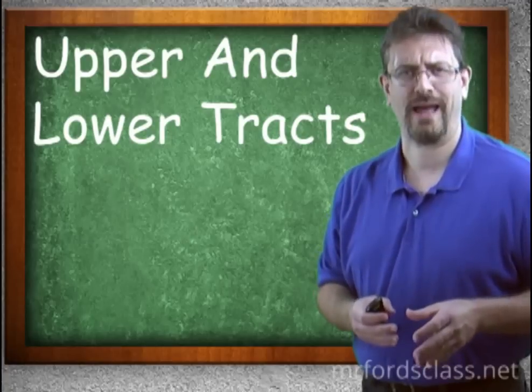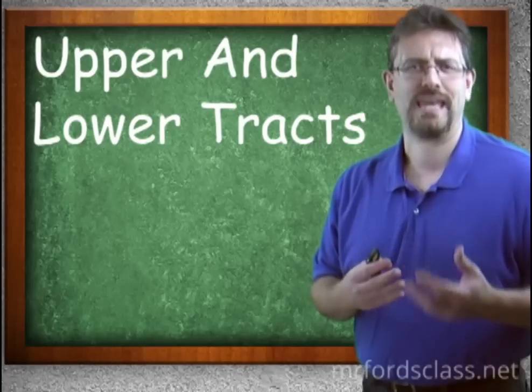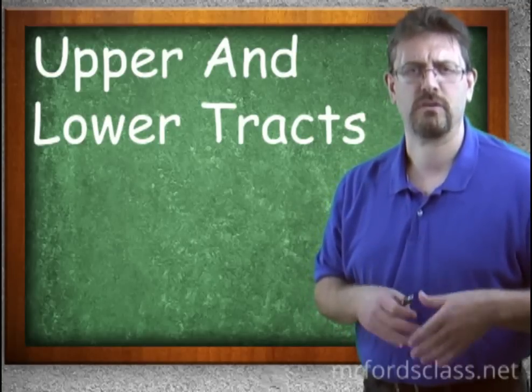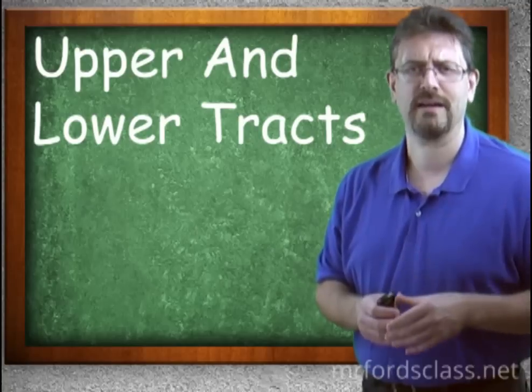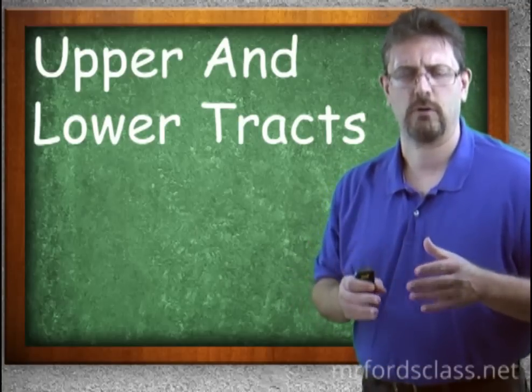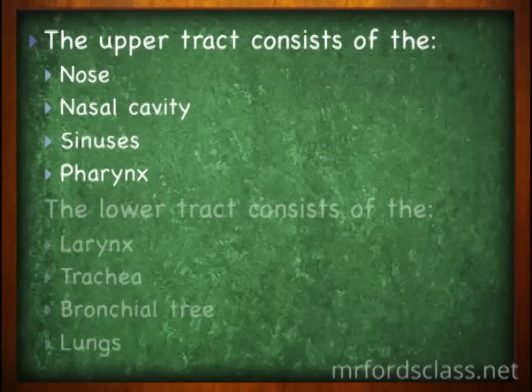We can divide the respiratory system into an upper and lower portion. So we have an upper tract and we have a lower tract. And there is some fuzzy area as far as where we divide these two apart. Some books will divide it at a certain area and other books will divide it at another area. So, in general, the upper tract consists of the nose, the nasal cavity, the sinus, and the pharynx.